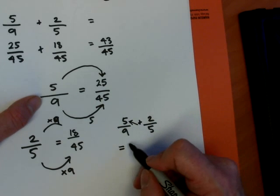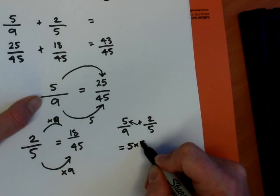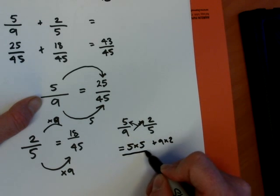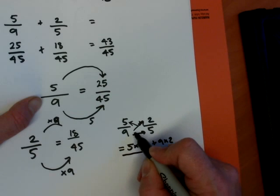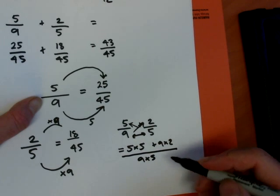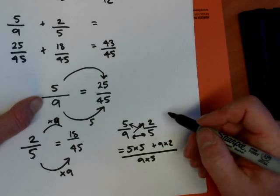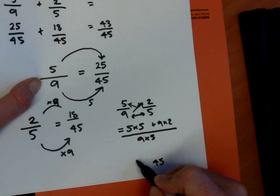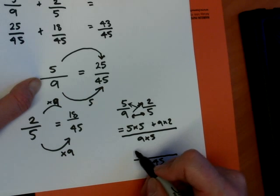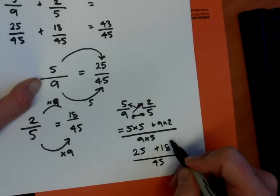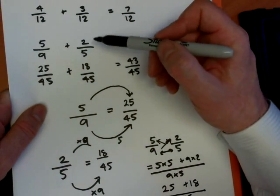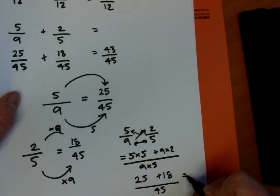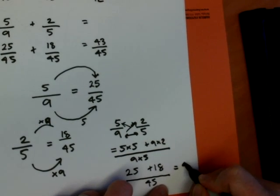So what we do here is we say right, we have to do a cross like this and we have to say 5 times 5 plus and then we do a cross this way, 9 times 2, all over the bottom numbers multiplied, 9 times 5. And that automatically puts it over 45 for you. So 9 5's are 45. And on the top we're going to have 25 plus 18. And notice that's what we had here, 25 plus 18. And the answer of course will be the same, 43 over 45.